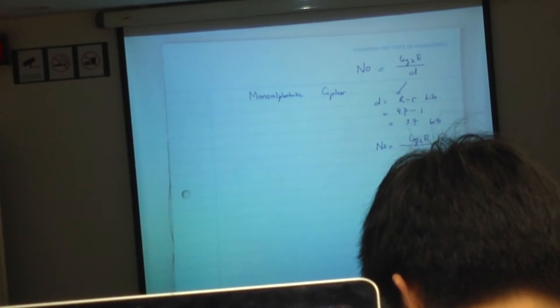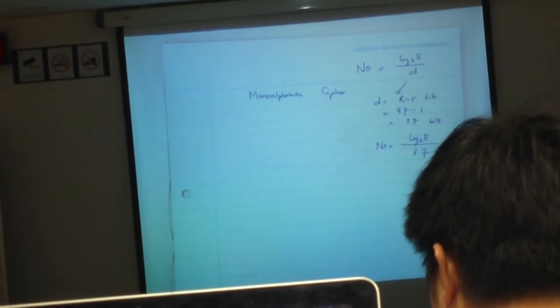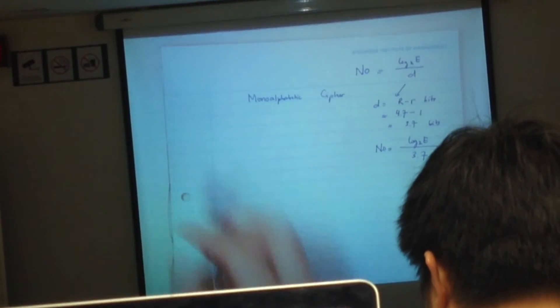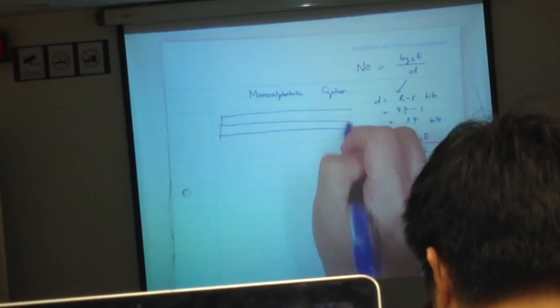E is the size of the key. So how can I measure the size of the key? If you remember monoalphabetic cipher, the key is like this.